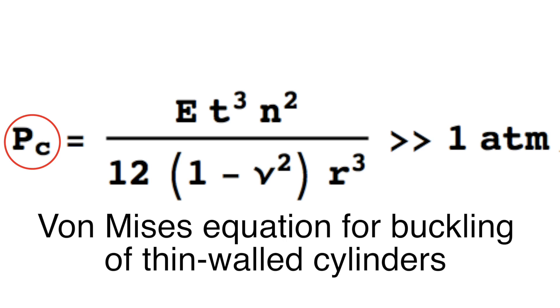Tubes have a threshold called the critical pressure. This pressure must be well above atmospheric to prevent vacuum implosion. P critical increases with the cube of wall thickness, so doubling the wall thickness will multiply the critical pressure by 8.